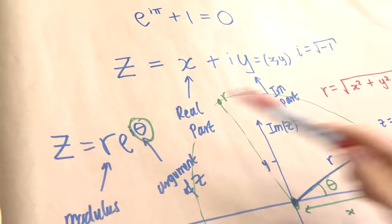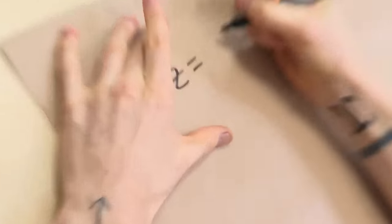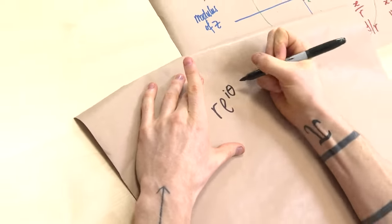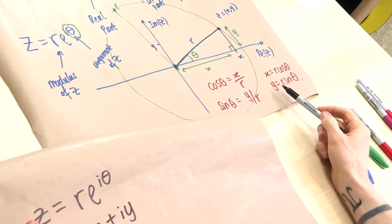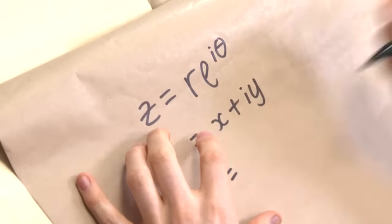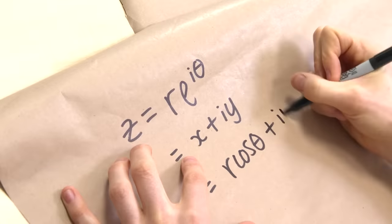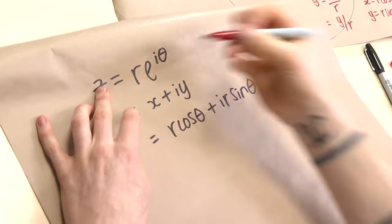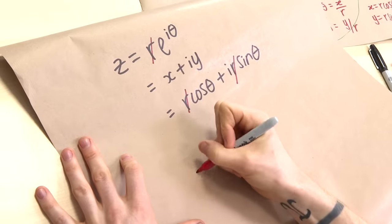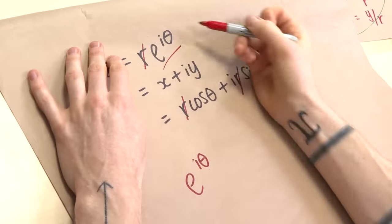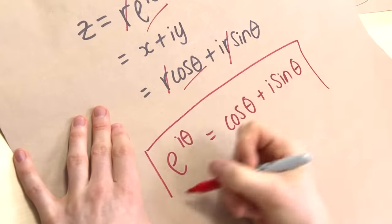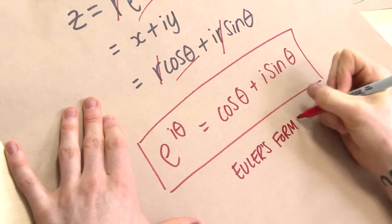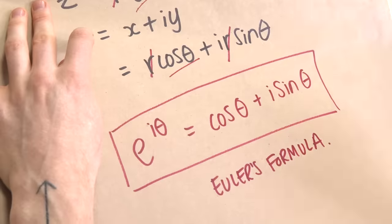Since these are the same complex number, all representations must be equal. We know z equals r·e to the i·theta in polar form, and also z equals x plus i·y. Substituting x = r·cos(theta) and y = r·sin(theta), we get r·cos(theta) plus i·r·sin(theta). Cancelling the r gives this awesome equation — Euler's formula: e to the i·theta equals cos(theta) plus i·sin(theta). That comes from complex numbers, drawing triangles, and trigonometry.